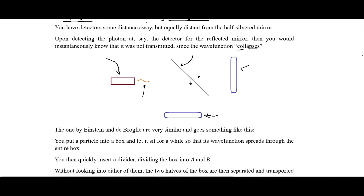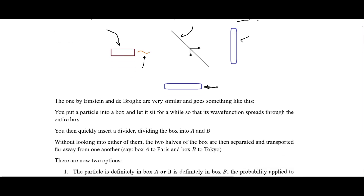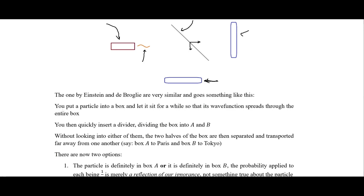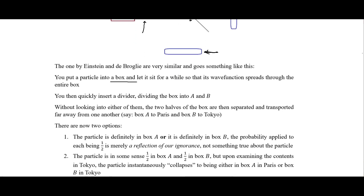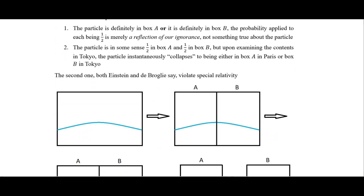The thought experiments by Einstein and de Broglie are very similar. You put a particle into a box and let it sit for a while so the wave function spreads out throughout the entire box. You then quickly insert a divider dividing the box into half A and half B, so we have this particle in a box with this wave function, and then we put this divider in so that we end up with half A and half B.